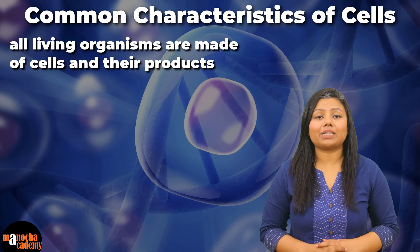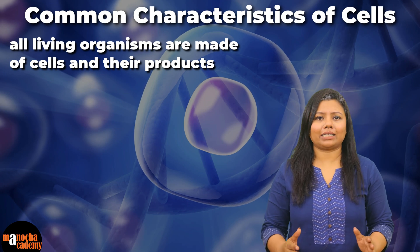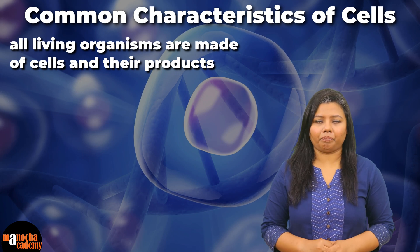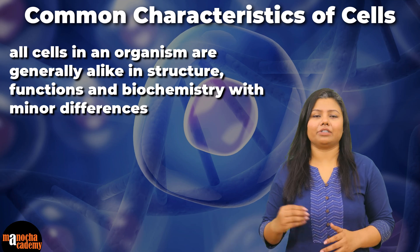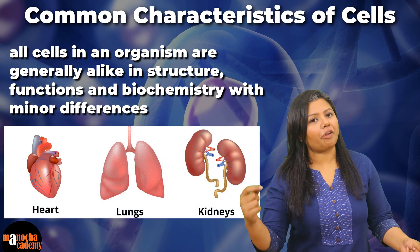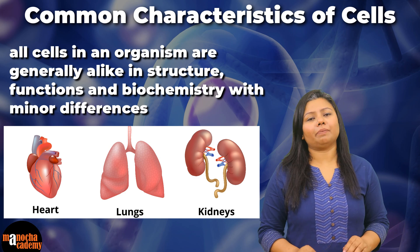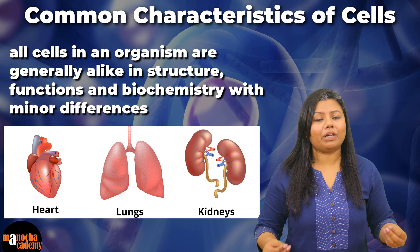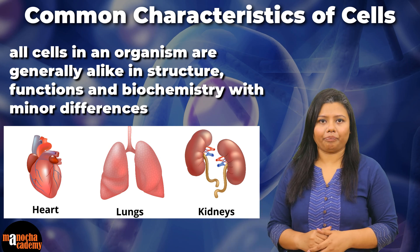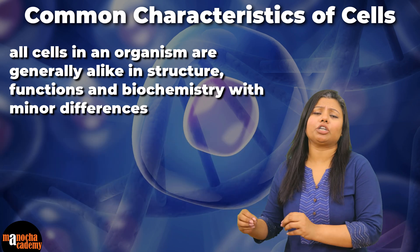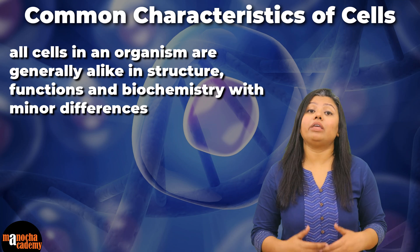Second, all living organisms are made up of cells and their products — so everything your body is made up of is either made by cells or is cells. Three, all cells are generally alike in their structure, function, and biochemistry with minor differences. A cell from your lung, heart, and kidney all have cell membrane, cytoplasm, a nucleus, and common biochemical reactions — yet they also have certain special functions, leading to differences between them.